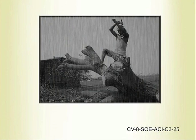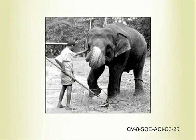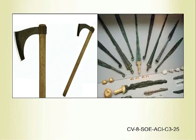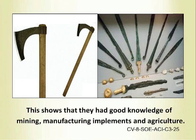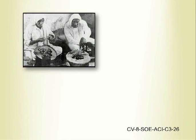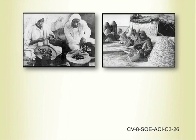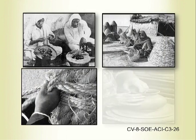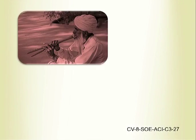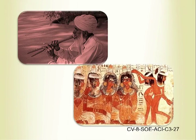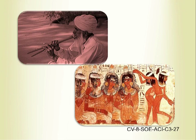Those days people used implements made of iron. They would cut down the forest, and weapons made from iron were used to tame elephants. The people had learnt cultivation of rice. This shows that they had good knowledge of mining, manufacturing implements, and agriculture. There were goldsmiths, basket weavers, rope weavers, and potters. Professionals like flute players, dancers, merchants, astrologers, and servants are also special features of the Later Vedic Age.